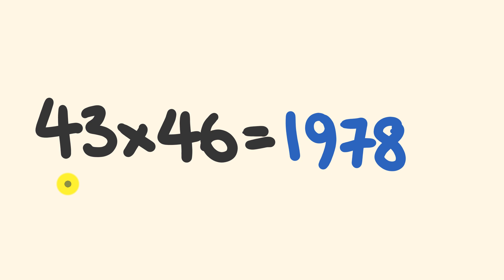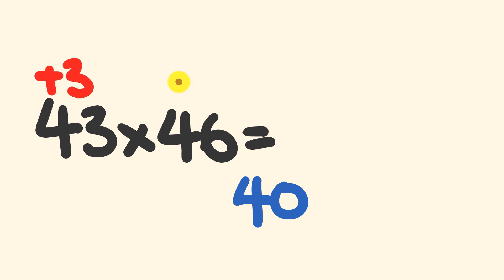So how did I work this out so fast? Well, we have 43 multiplied by 46. As I've said, they have the same tens value. They have both numbers in their 40s. I'm just going to jot that 40 down there because we're going to come back and use that in a second. The first thing we do is we see how far each one of these numbers is from 40. So 43 is 3 more than 40 and 46 is 6 more than 40. Easy so far, right?